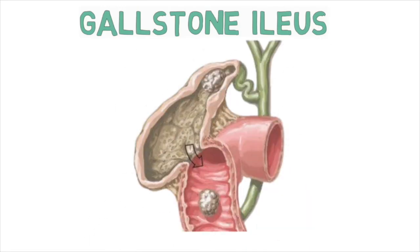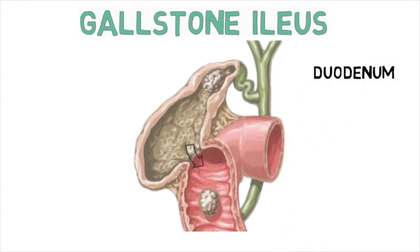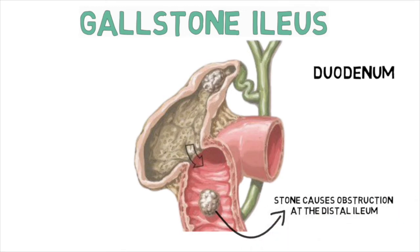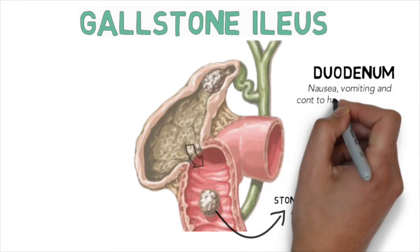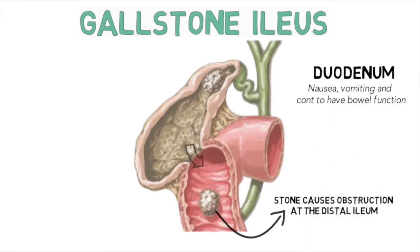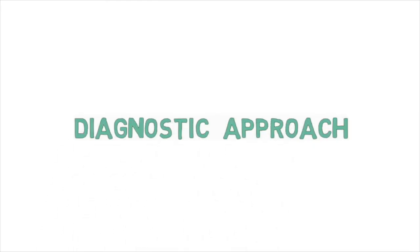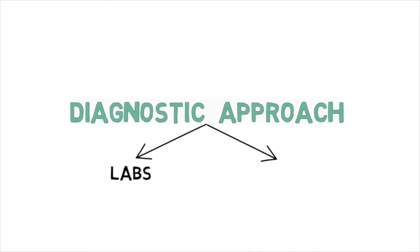Now let's talk about a rare cause of intestinal obstruction: gallstone ileus. This results from erosion of a large stone through the gallbladder directly into the small intestine, creating an internal fistula between the gallbladder and the intestinal tract, usually at the level of the duodenum. The stone typically doesn't cause obstruction at the duodenum but causes it lower down where the bowel is narrower, usually at the distal ileum just proximal to the ileocecal valve. In early stages, patients may have intermittent obstruction with nausea and vomiting but maintained bowel function. Complete obstruction occurs when the stone is fully embedded in the ileum, resulting in obstipation.